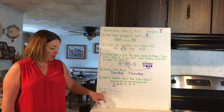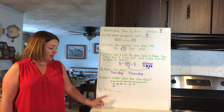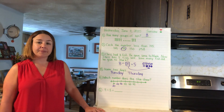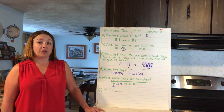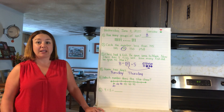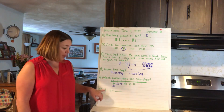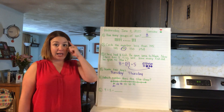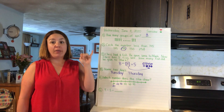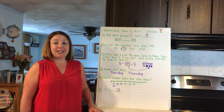Number six: figure out the answer to this number sentence — nine plus five equals what. Think about what the symbols mean: plus and equals. You can make a picture, use your fingers, or use manipulatives like snap cubes or Legos. I like to use my fingers — I'm going to put nine in my head and put up five fingers: nine, ten, eleven, twelve, thirteen, fourteen. Great work today, guys! Keep up the good work — I'll see you tomorrow, bye!